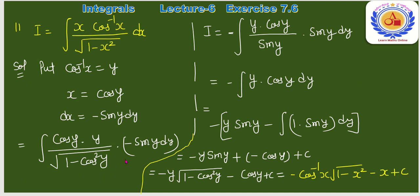Substitution के बाद: x = cos y, cos⁻¹(x) = y, √(1−cos²y) = sin y, dx = −sin y dy। Simplify करने पर sin y cancel हो जाता है और −∫y·cos y dy बचता है।